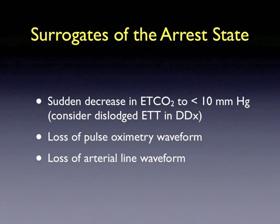Other surrogates of the arrest state can be used, including a sudden decrease in end-tidal CO2 to less than 10 millimeters of mercury. However, one must also consider a dislodged endotracheal tube in the differential diagnosis. Additionally, the loss of a pulse oximetry or arterial line waveform can indicate the arrest state as well.